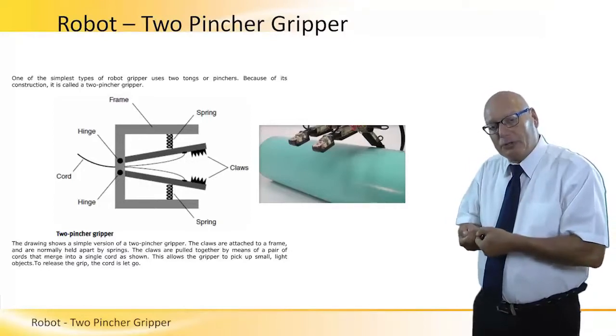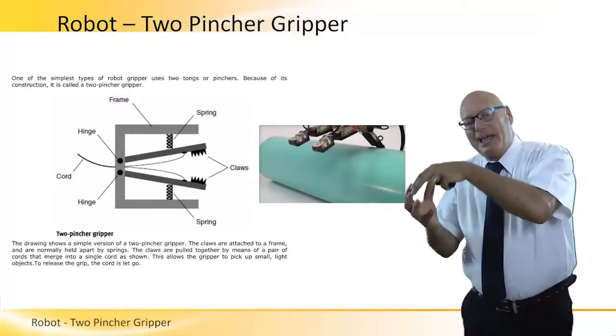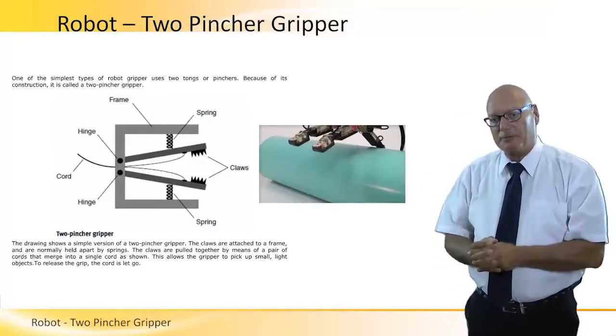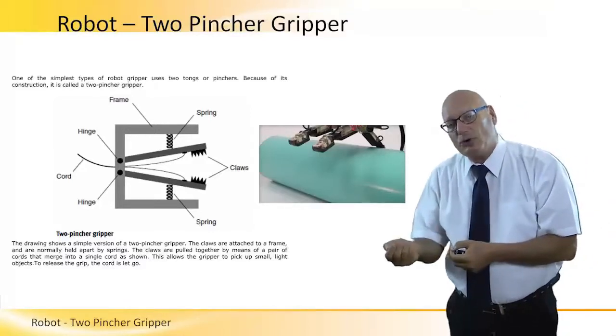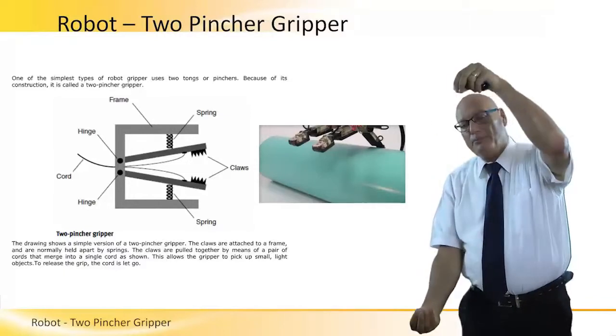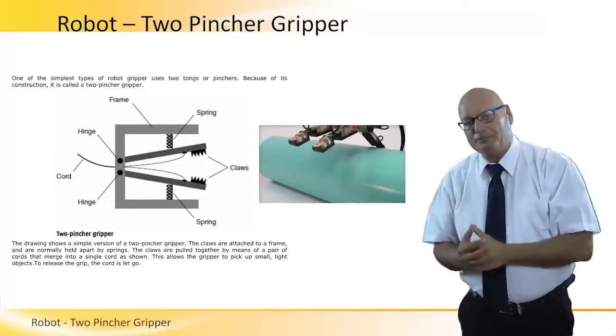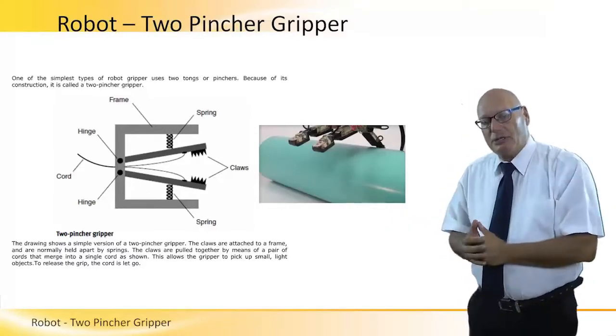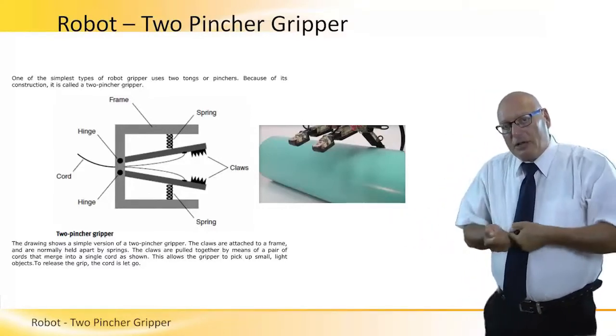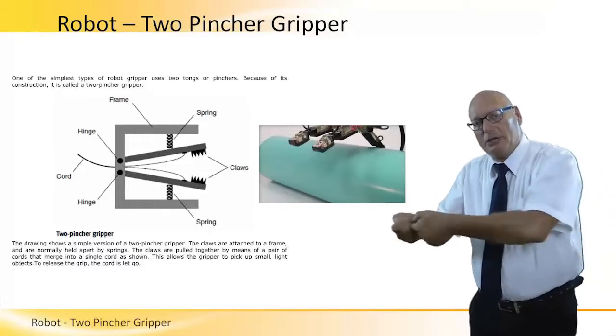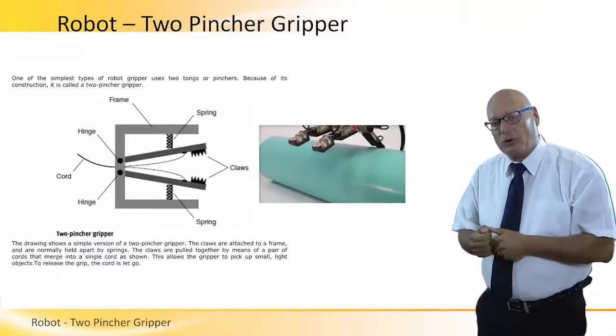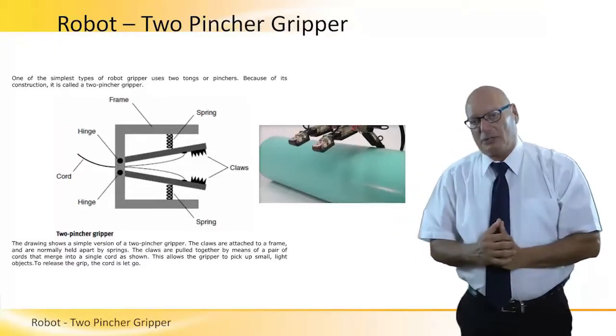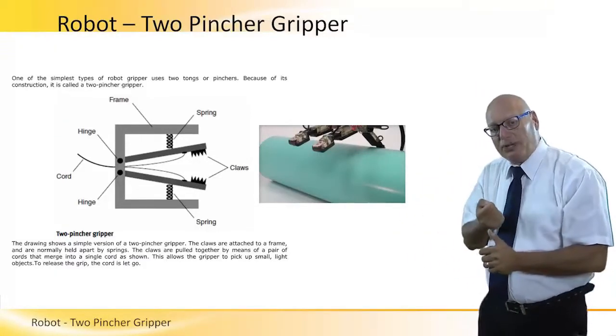When we pull the cord, the two claws get closer together and we can hold this particular object. When we release the cord, the two springs pull the two claws apart. There is a frame and hinges, so opening and pulling, and pulling and releasing the cord will open and close the claws.